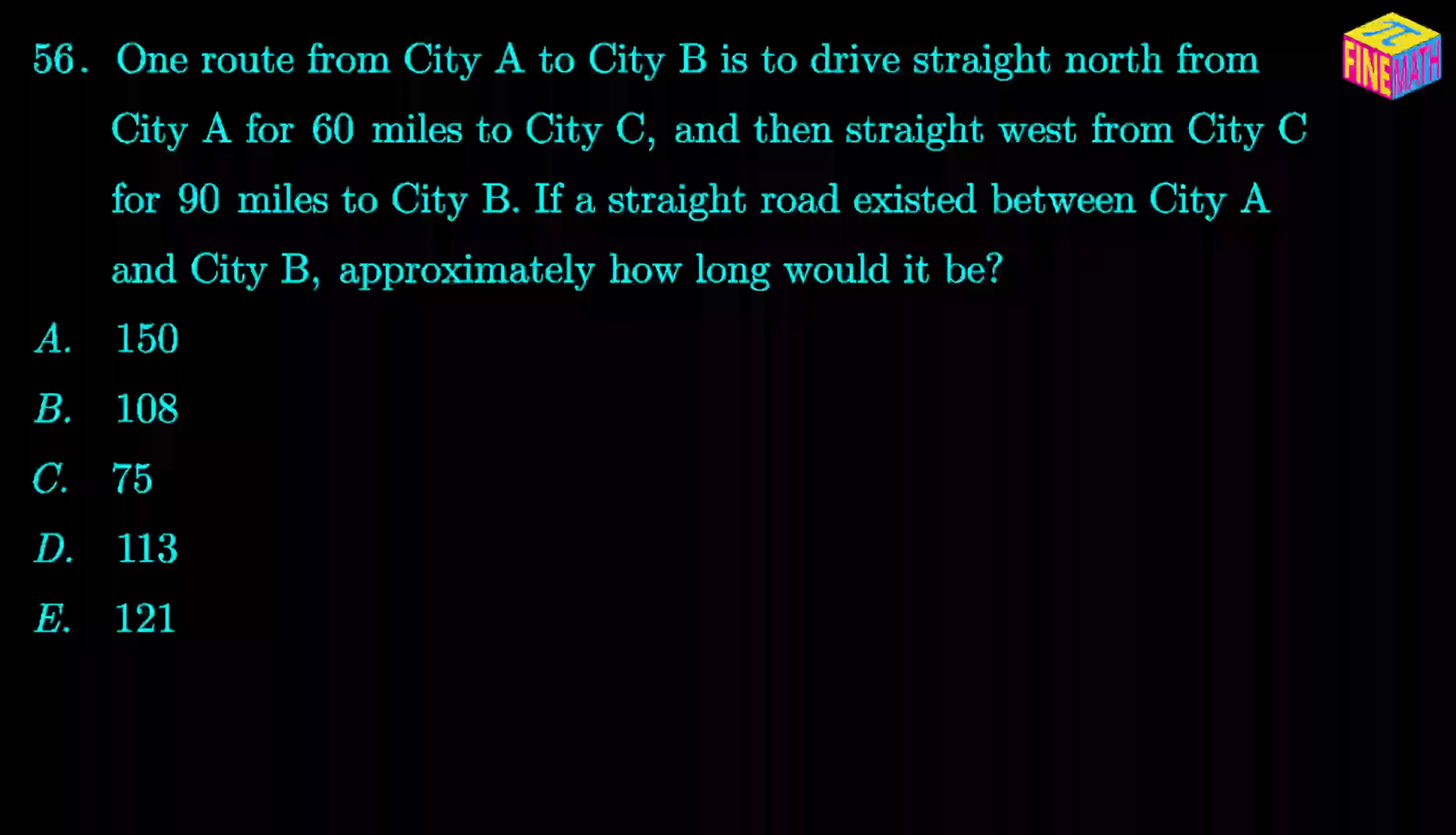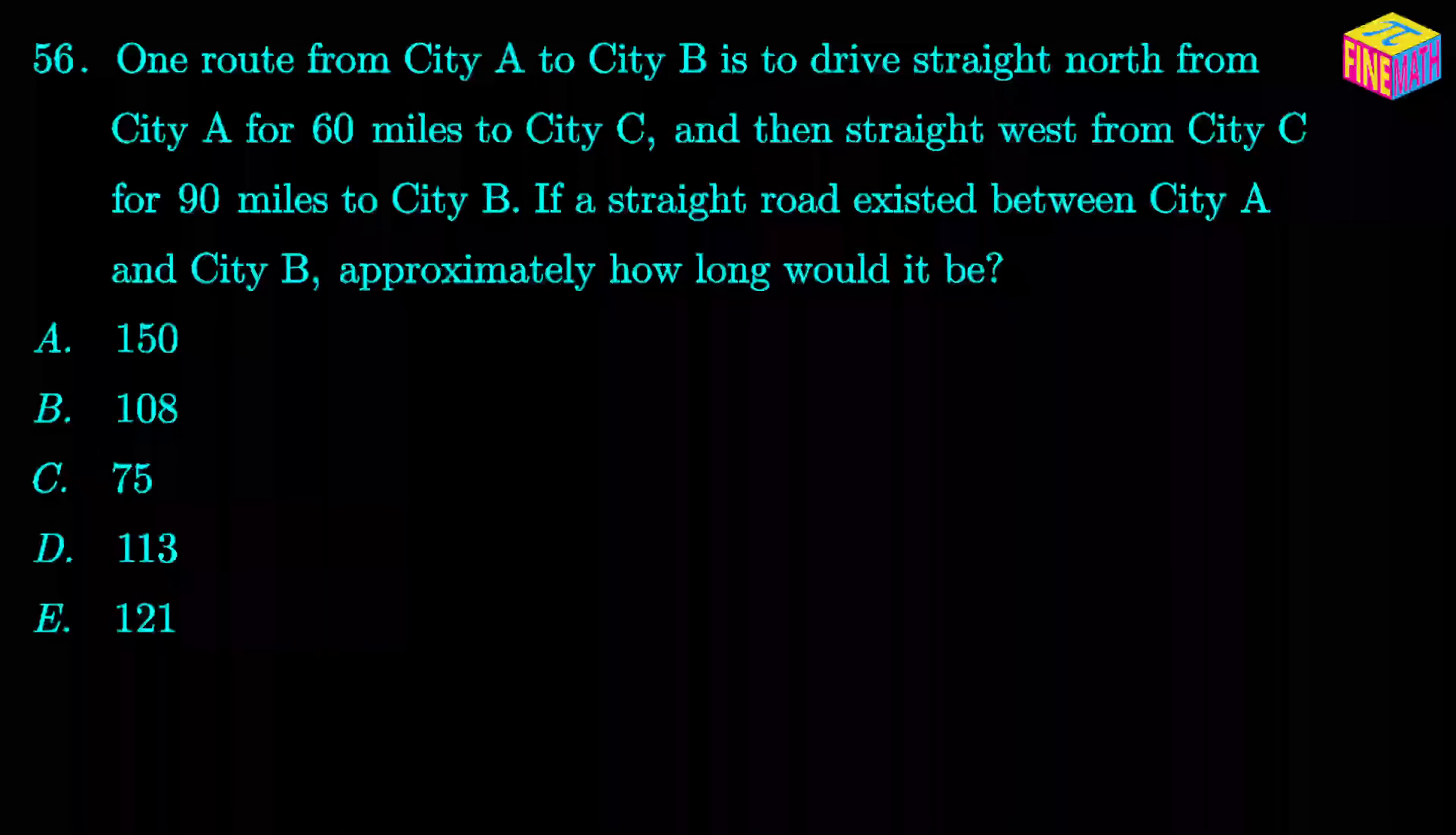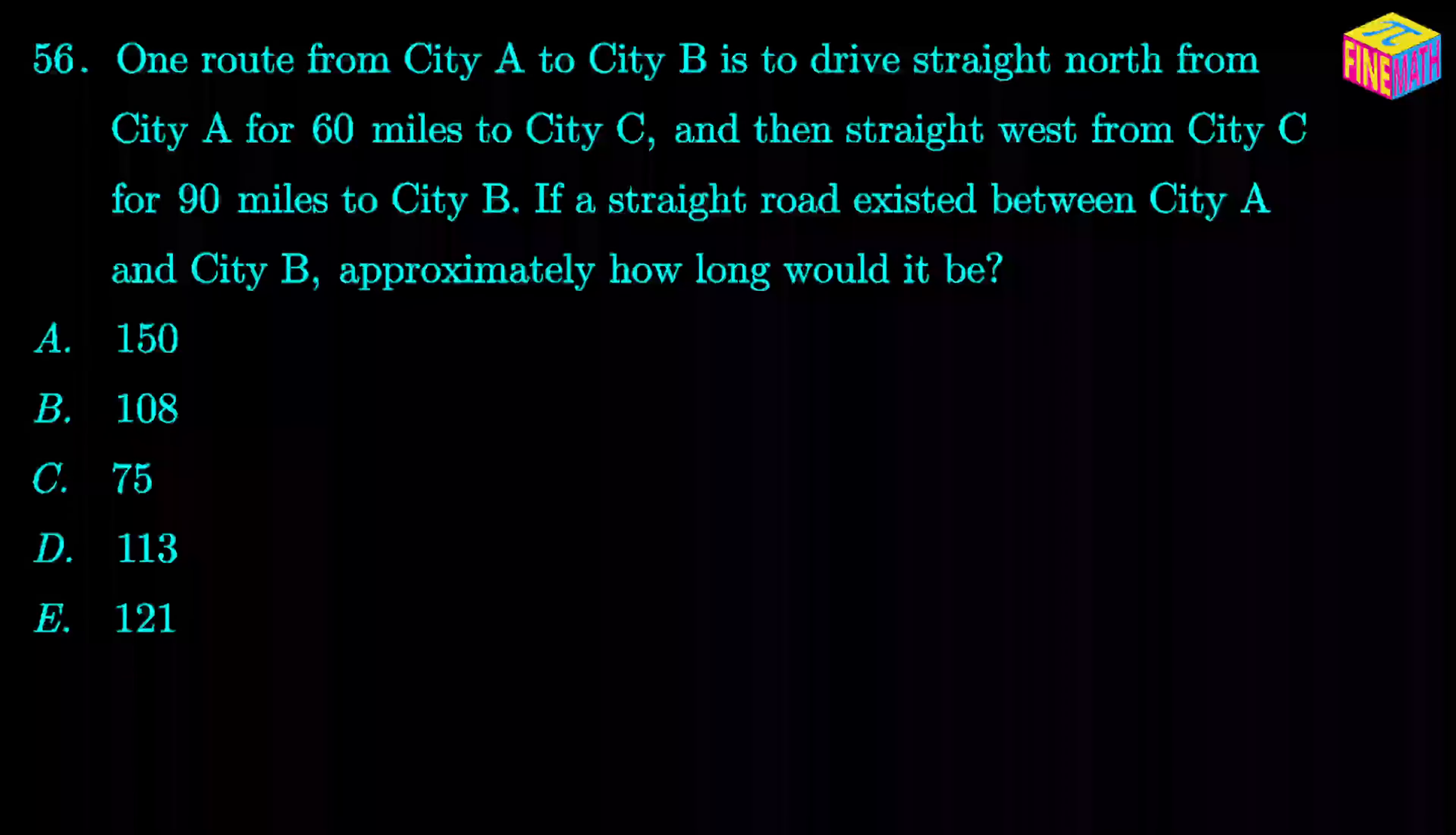The question says, one route from city A to city B is to drive straight north from city A for 60 miles to city C and then straight west from city C for 90 miles to city B. If a straight road existed between city A and city B, approximately how long would it be?